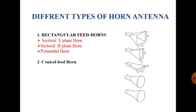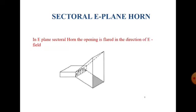Horn antennas are broadly divided into two categories: rectangular feed horn and conical feed horn. In rectangular feed horn, a rectangular waveguide is used, and it can be classified into three categories: sectoral E-plane horn, sectoral H-plane horn, and pyramidal horn. When a cylindrical or circular waveguide is used instead of a rectangular waveguide, we have the conical feed horn. The diagram shows different types with clearly visible electric and magnetic field directions, which are orthogonal to each other.